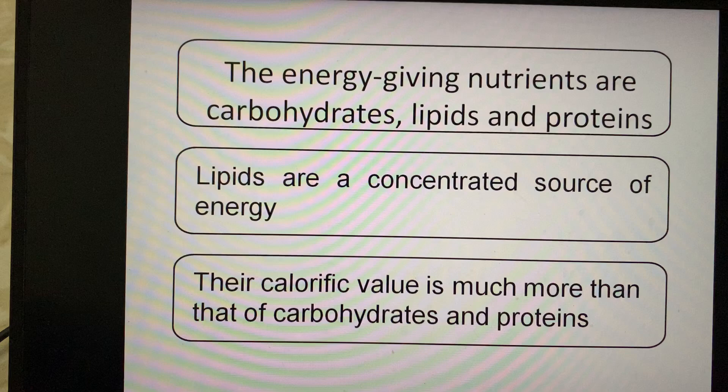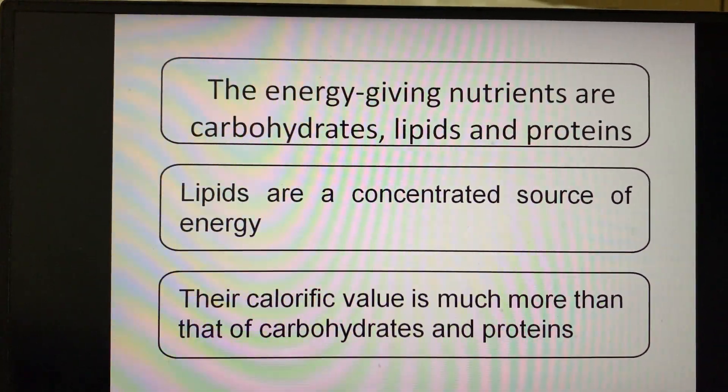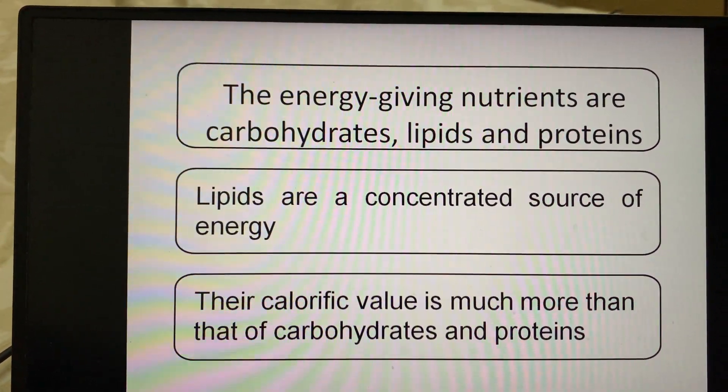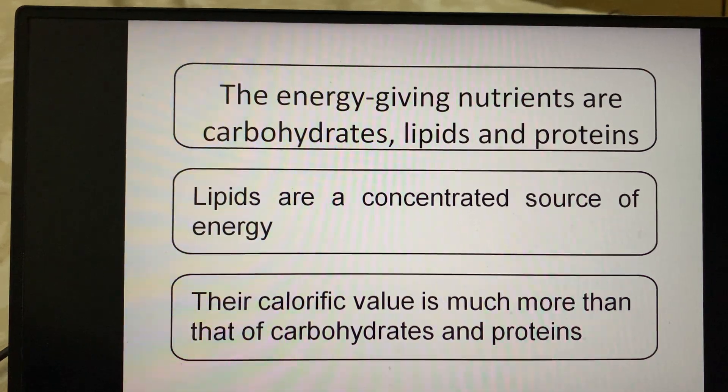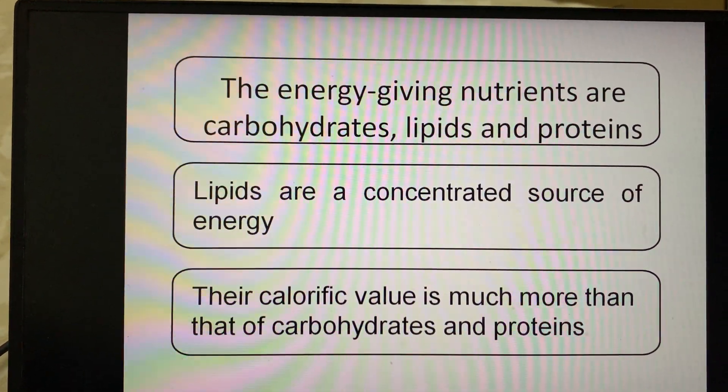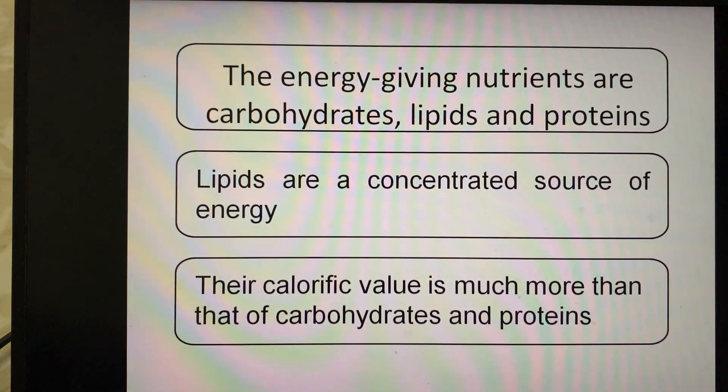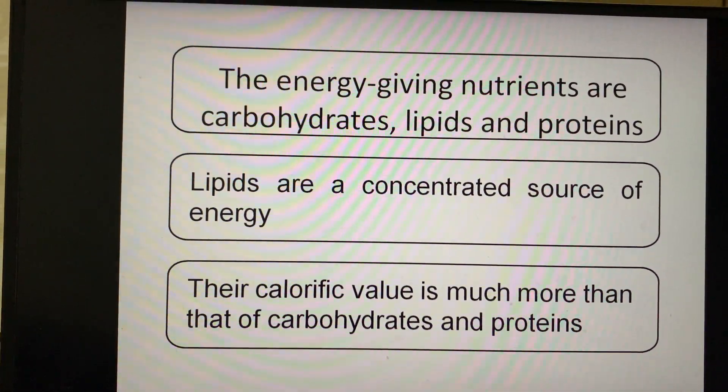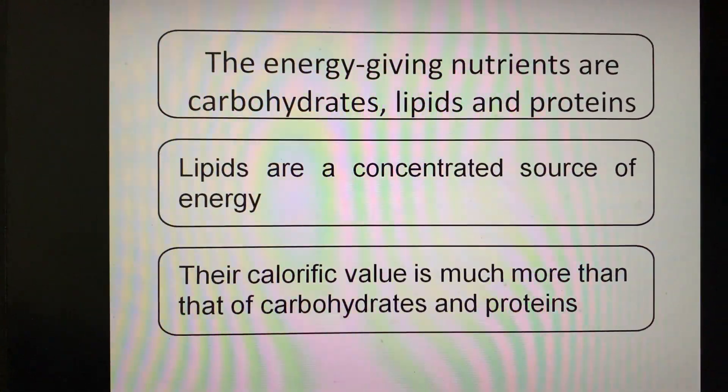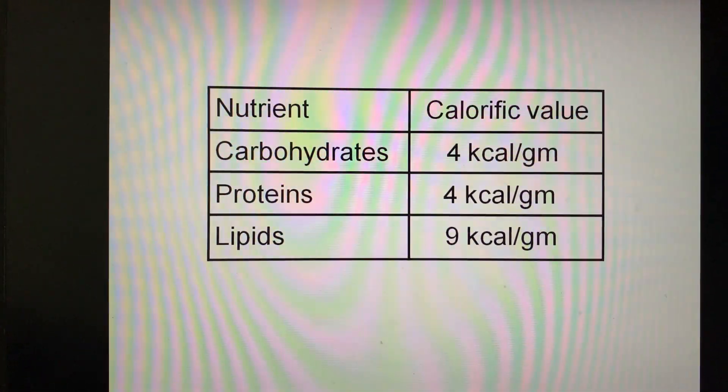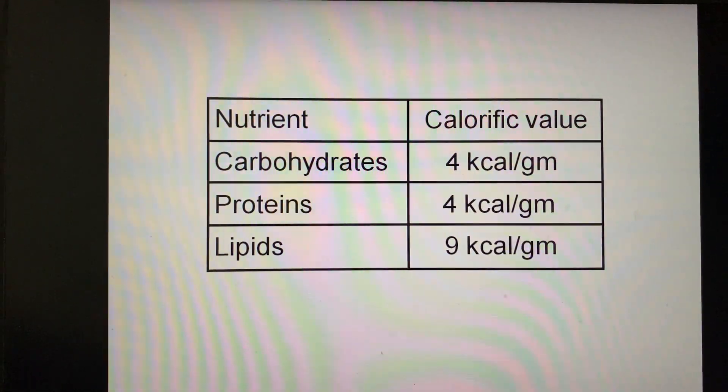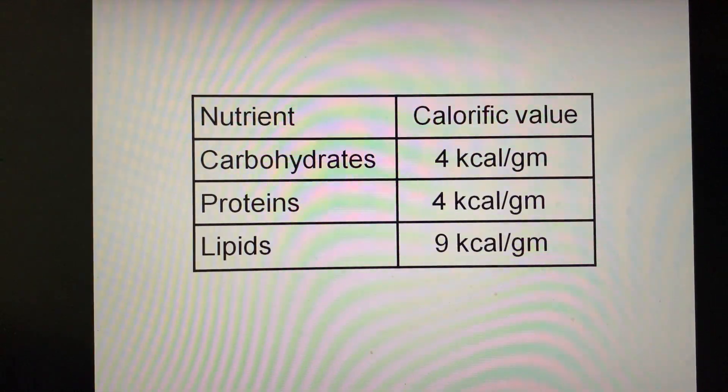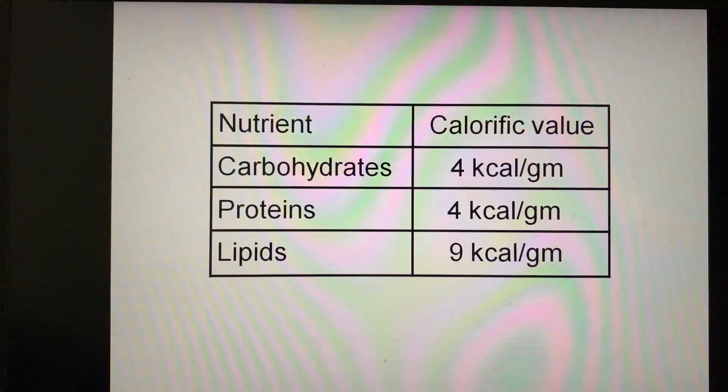The energy-giving nutrients are carbohydrates, lipids, and proteins. Lipids are a concentrated source of energy with much higher value than carbohydrates and proteins. Their caloric value is 9 kilocalories per gram for lipids, while carbohydrates and proteins both provide 4 kilocalories per gram. They are a powerful source of energy.